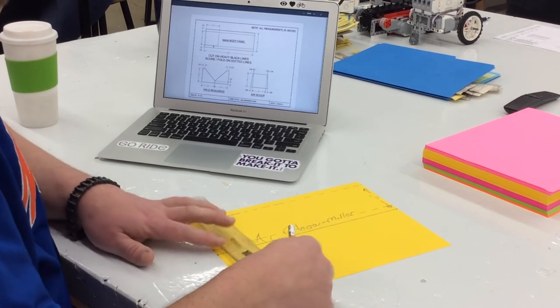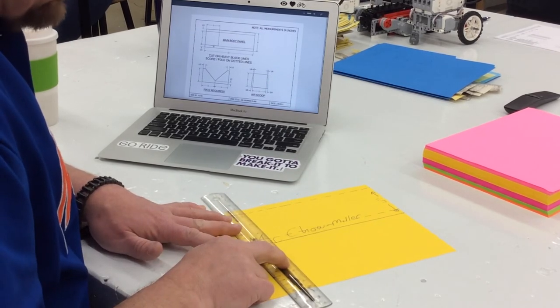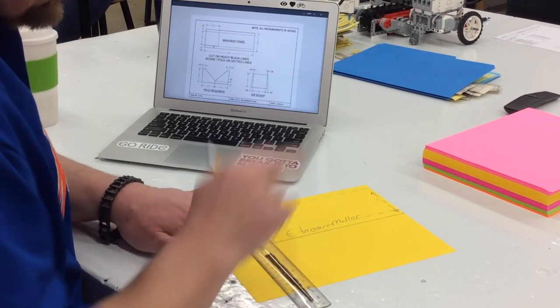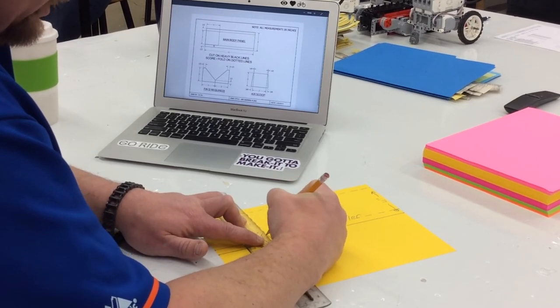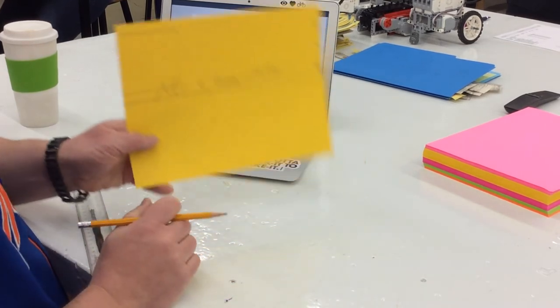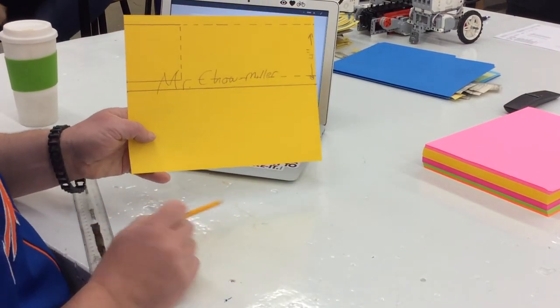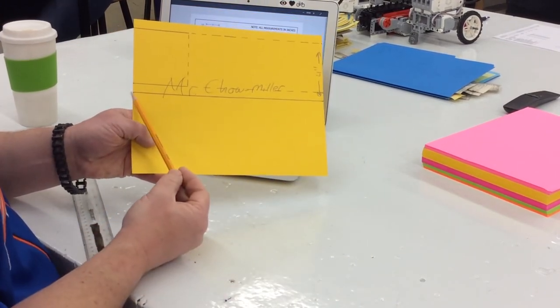So, right here, where the end of those solid lines are, I'm going to line up my ruler, make another dashed line, and there is the beginning of the body of my skimmer. I've got my 4-inch line down here.